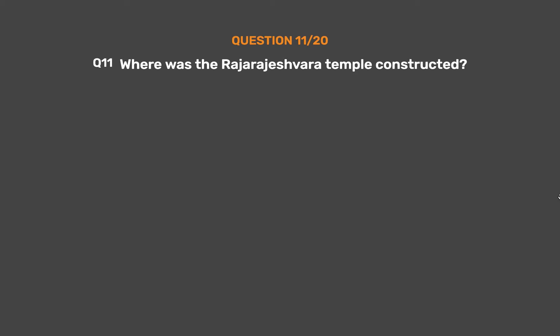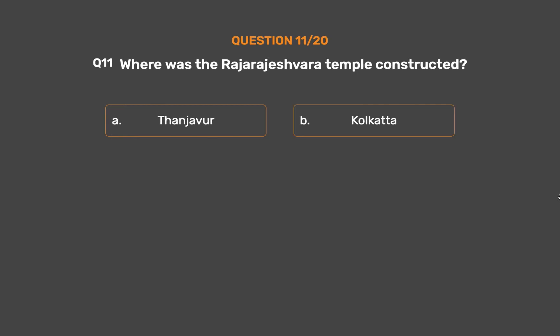Question No. 11: Where was the Raj Rajeshwara temple constructed? Option A: Tanjavur. Option B: Kolkata. Option C: Delhi. Option D: Madras.